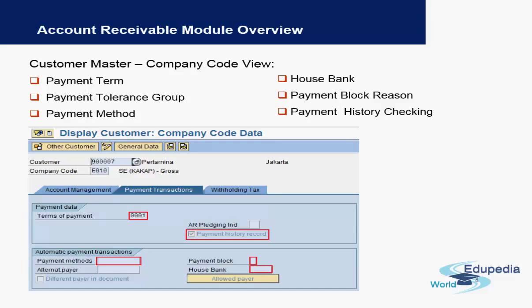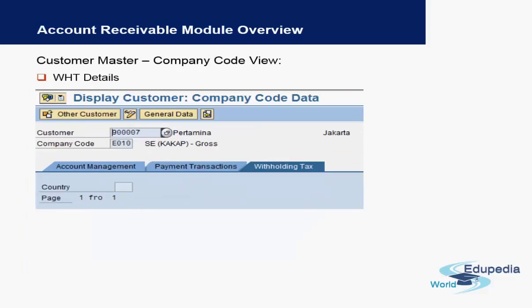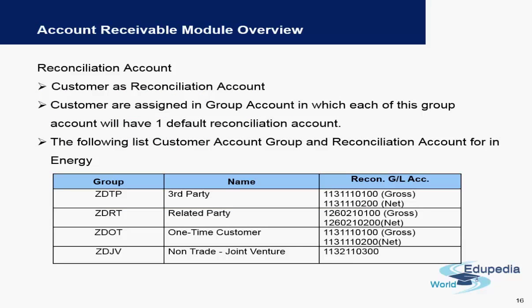If there are any payment blocks, those need to be assigned here as well. If a company has any withholding tax relevance, those details also need to be assigned in this tab.